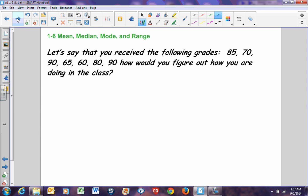Let's look at computing some values. Let's say you received the following grades: 85, 70, 90, 65, 60, 80, and 90. How would you figure out how you're doing in your class? Well, to do this, we should probably figure out the mean, the median, the mode, the range, and determine which is the best measure of central tendency.